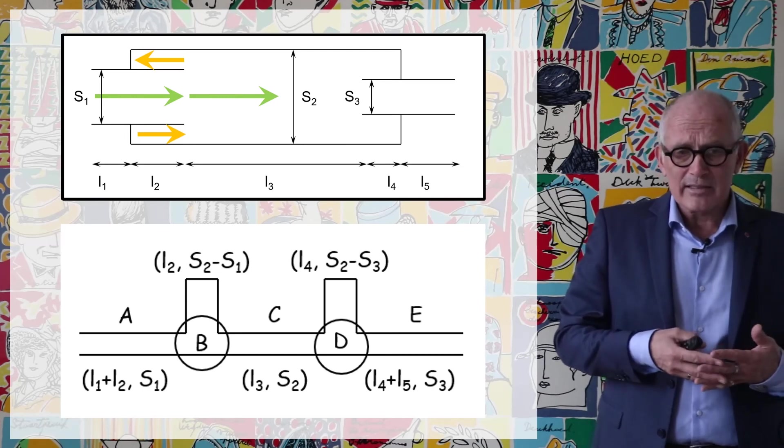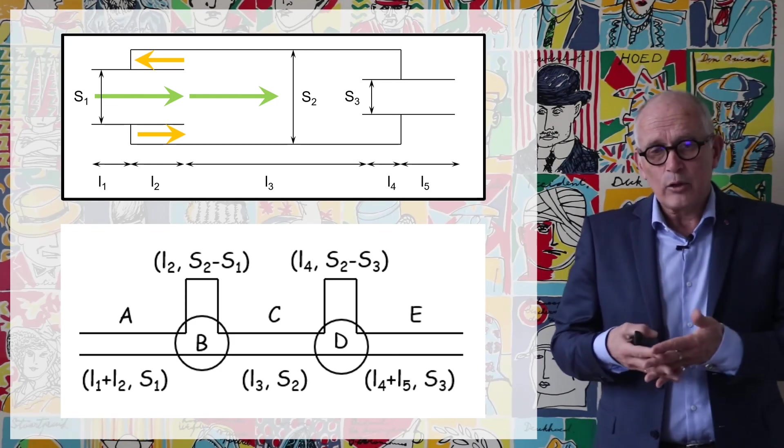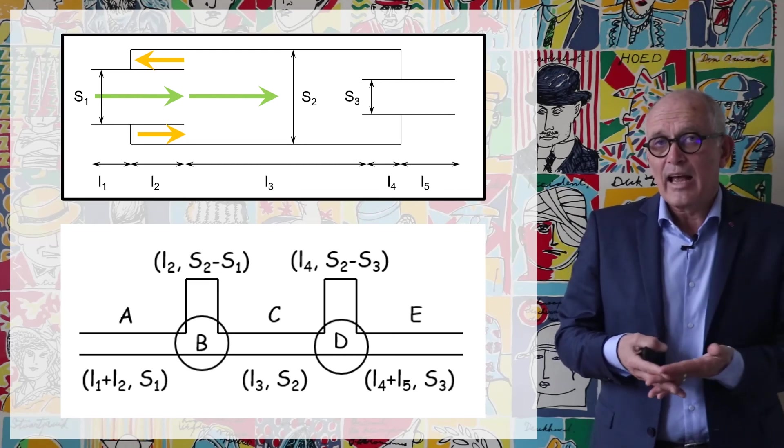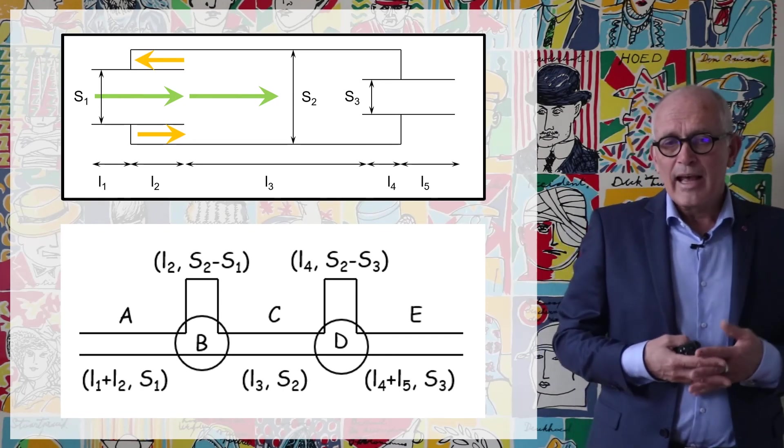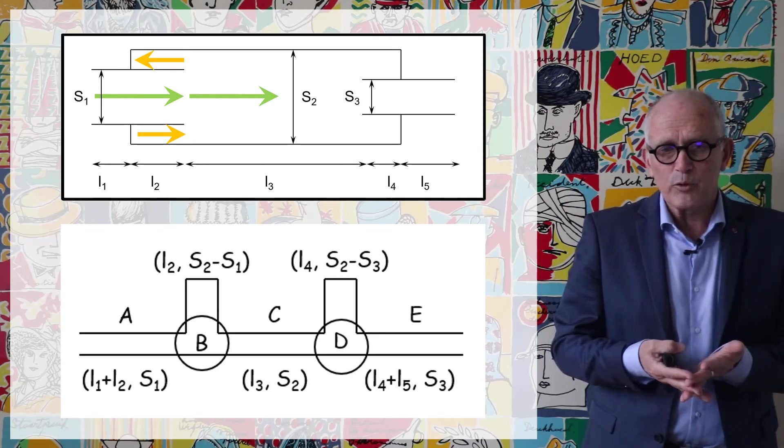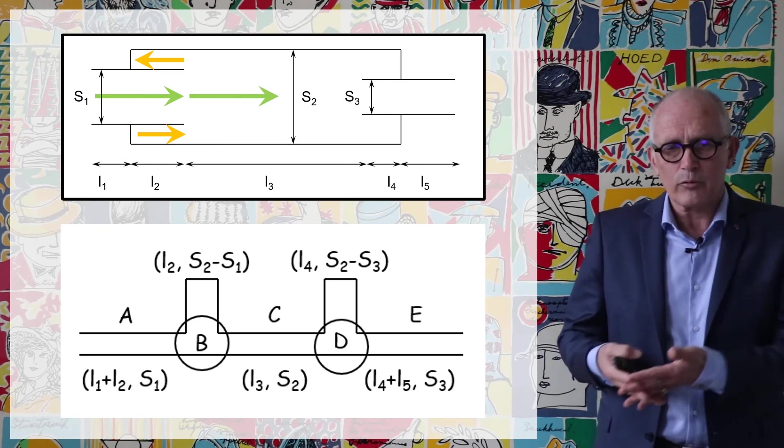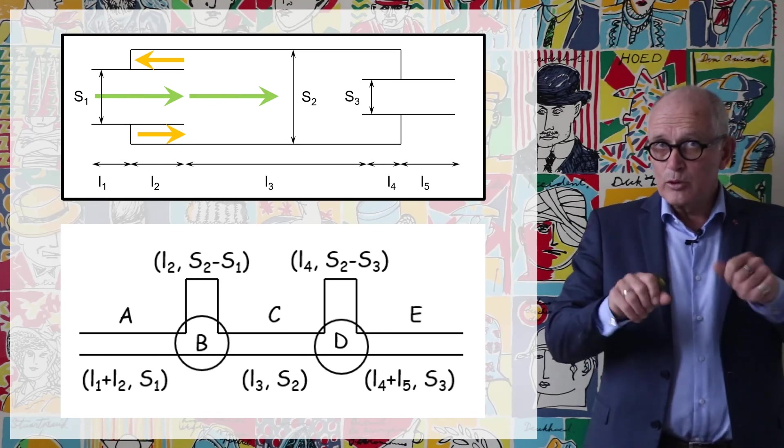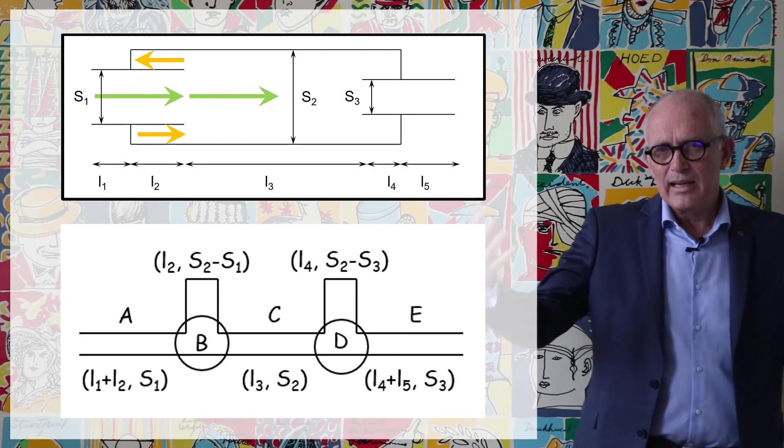The derivation has a length L2 and a cross section S2 minus S1 on the left side and on the right side it has a cross section S2 minus S3 and the length L4. So it's an easy way to create resonators in the system and you see that even in this very simple configuration you have a large number of parameters S1, S2, S3, L1 to L5. So you have eight different parameters that you can play with to optimize the transfer matrix between the inlet and the outlet.